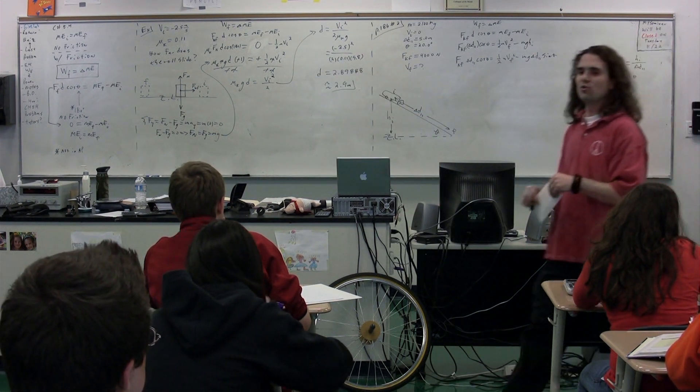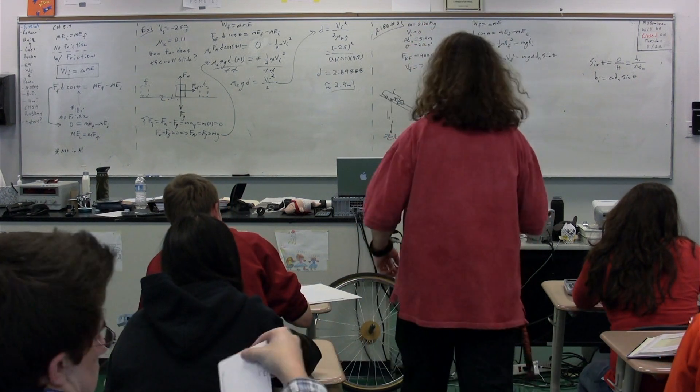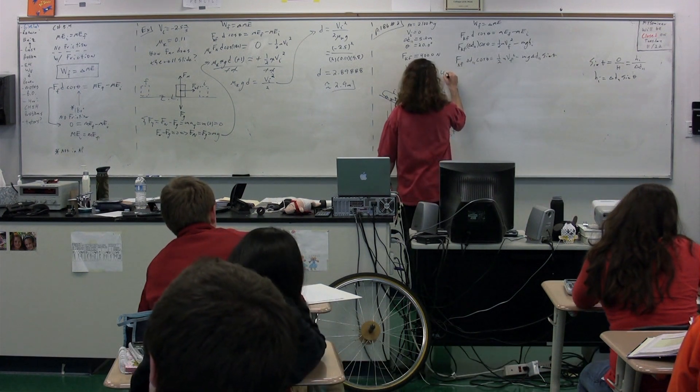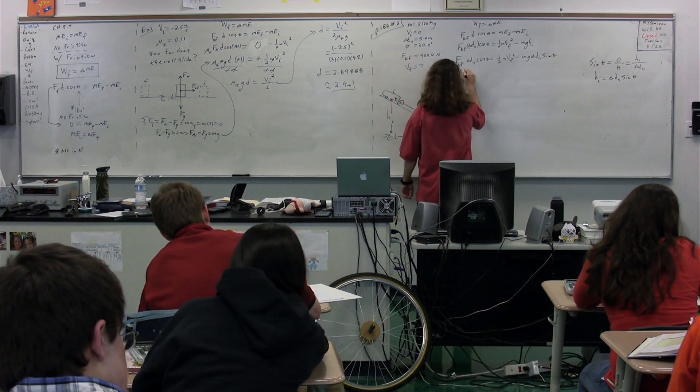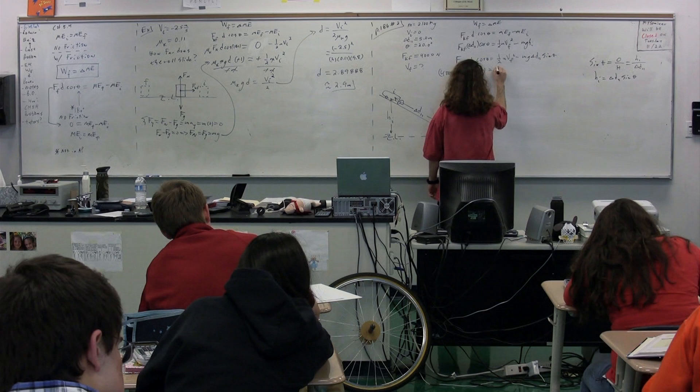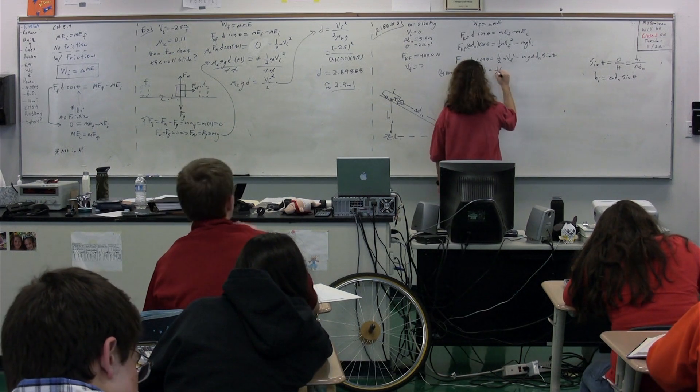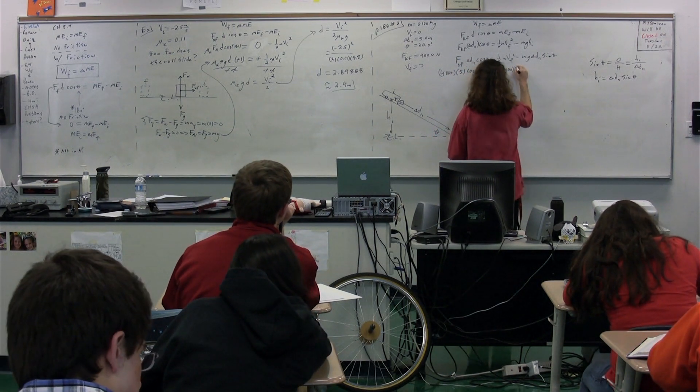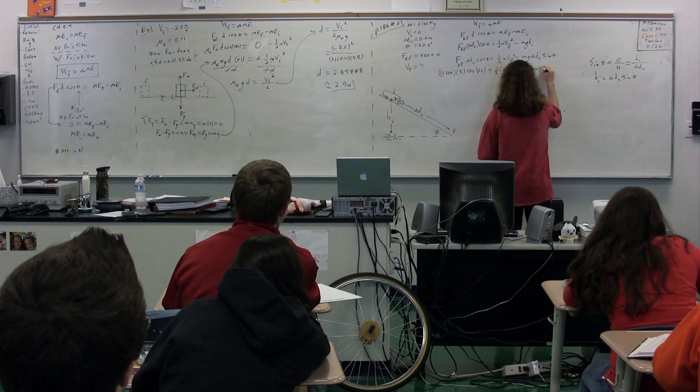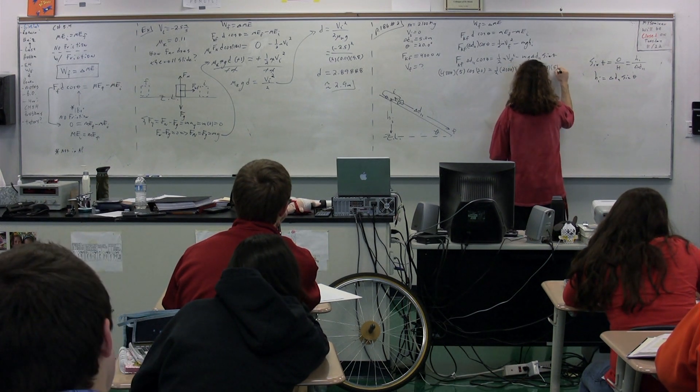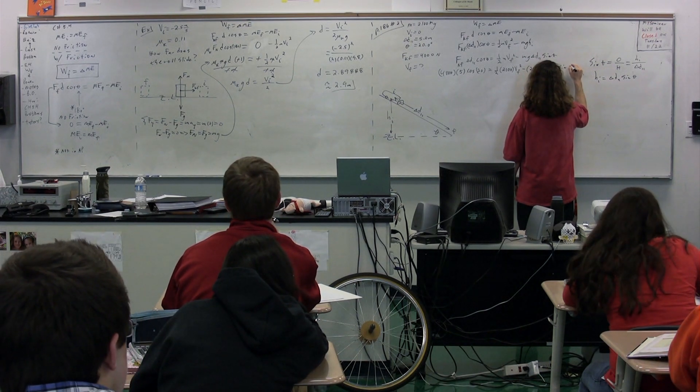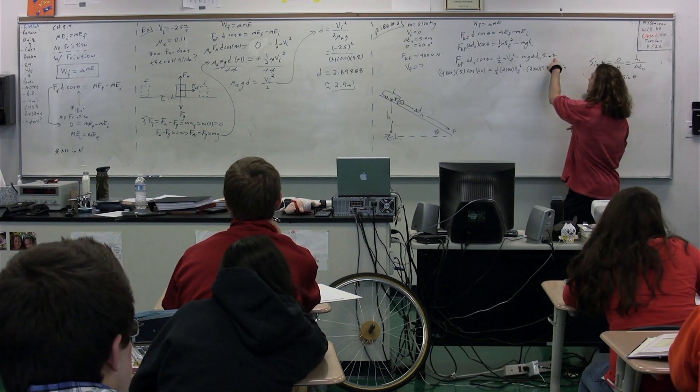From left to right, please give me all of the numbers. 4000 times 5.0, delta-D parallel times the cosine of 180, equals one-half times the mass 2100 times the velocity final, which we're looking for, squared minus the mass 2100 times g 9.8 times delta-D parallel 5.0 times the sine of theta. Which is? Sine of theta, 20.